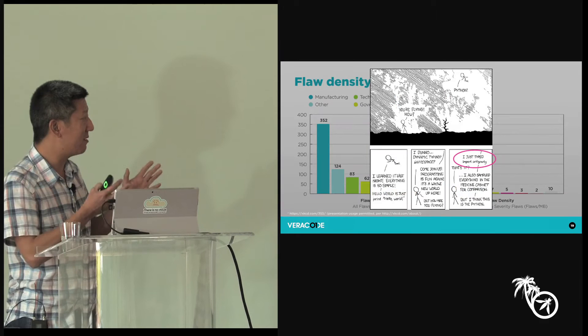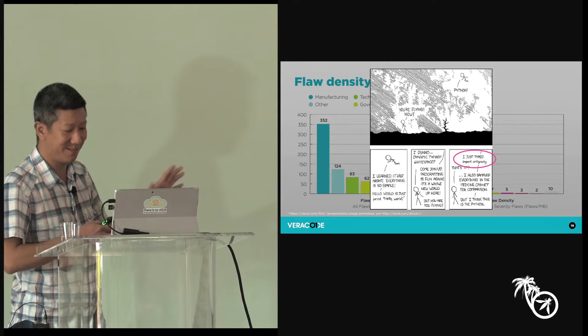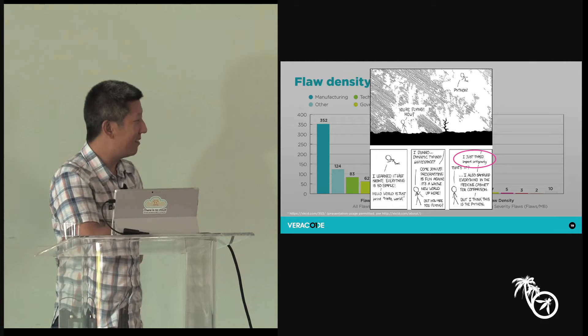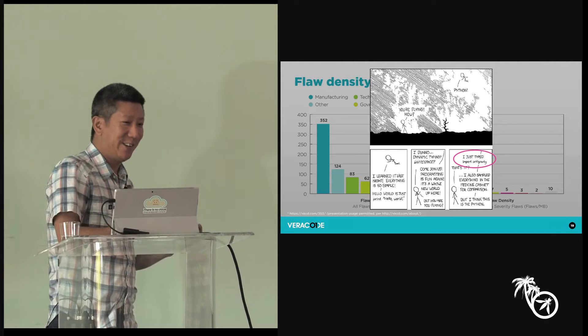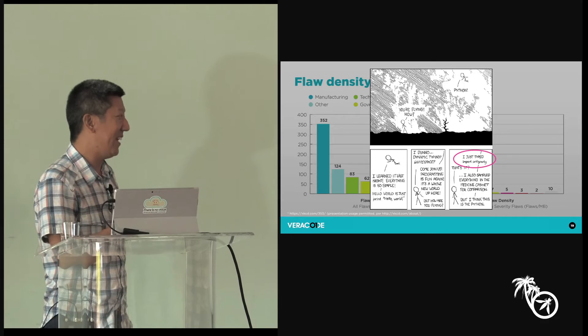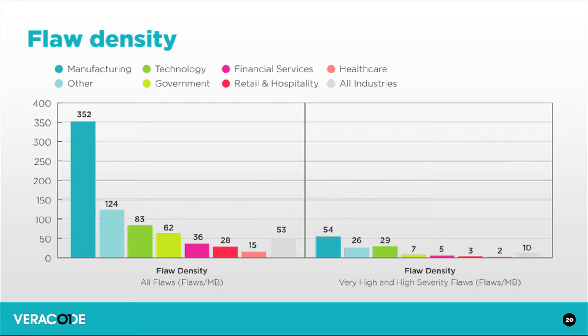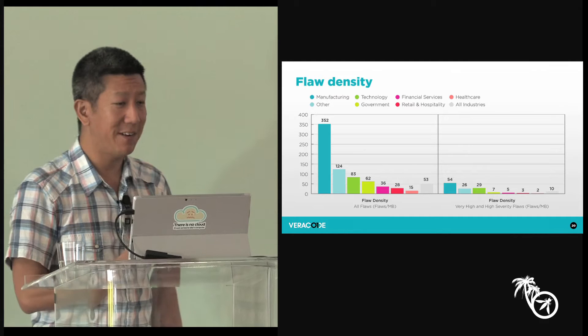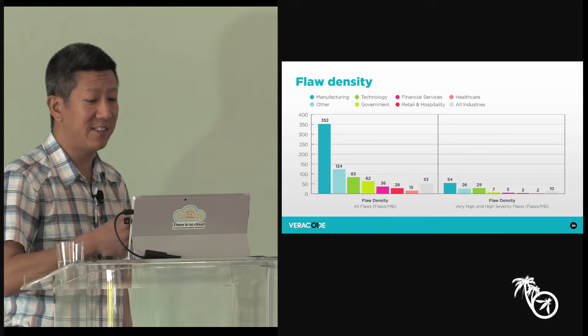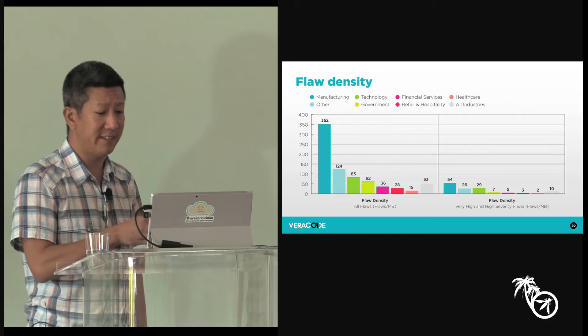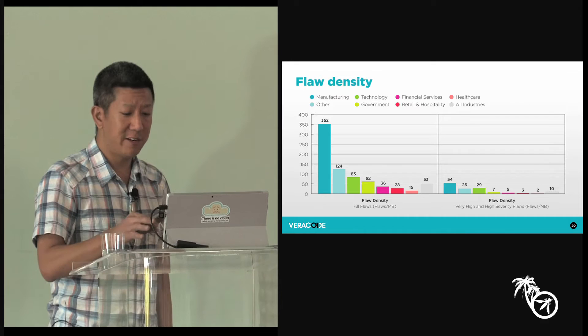Take the XKCD cartoon: the guy's flying because he used Python — 'import antigravity.' You can do a lot in very little code in Python, whereas implementing anti-gravity in Java might take 10,000 lines of code instead of one. So that impacts how you report on flaw density. Languages like C and C++ produce compiled code that is really high density, which means any industry using a lot of C and C++ will have a higher flaw density. Do you really think manufacturing is 23 times worse than healthcare? I really don't think there's that much of a difference.